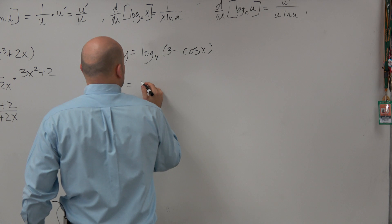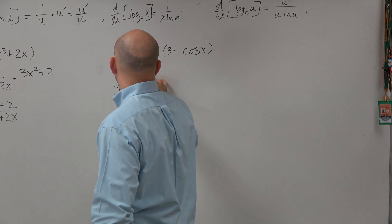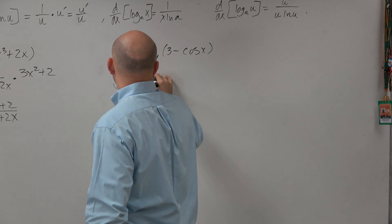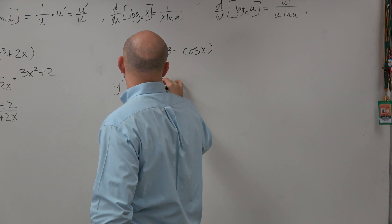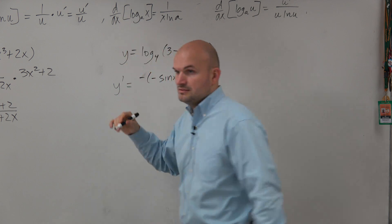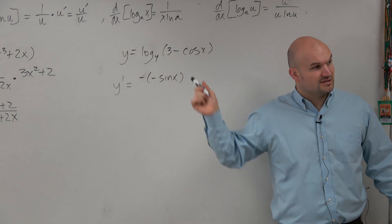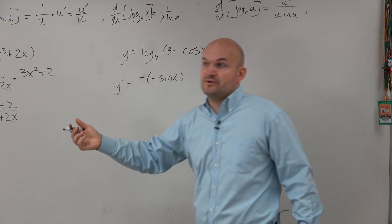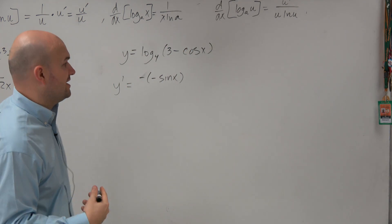Therefore, that's going to be minus a negative sine of x, because there's the negative there, and when you take the derivative of cosine of x, you get negative sine of x.